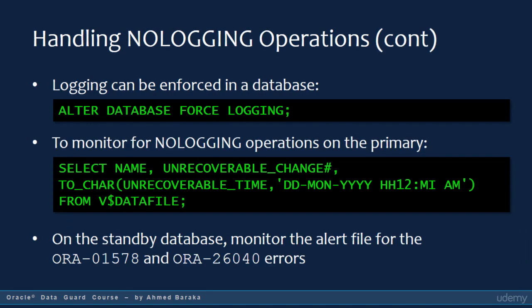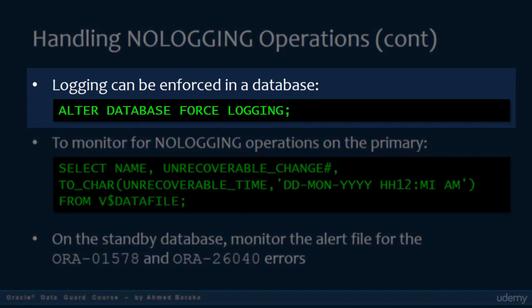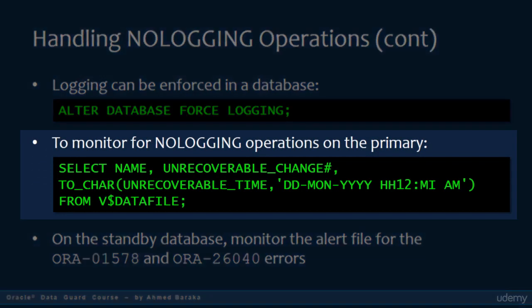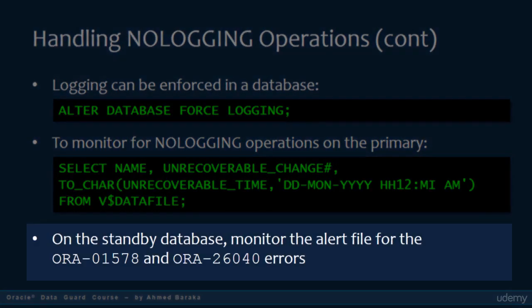When DataGuard is considered, always enable the force logging option in the database by running: ALTER DATABASE FORCE LOGGING. You can use the view V$DATAFILE to monitor for no logging operations on the primary database. On the standby database side, you can monitor the alert file for errors ORA-01578 and ORA-26040.